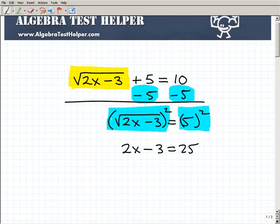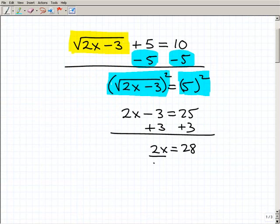All right, so we're almost there. Now we have a nice basic equation to solve, so I'm just going to go ahead and add 3 to both sides of the equation, and I get 2x is equal to 28. And then when I divide both sides of the equation by 2, I get x is equal to 14.